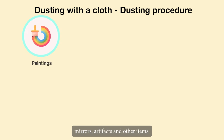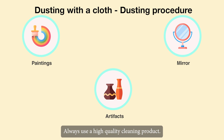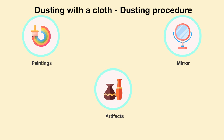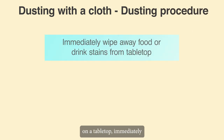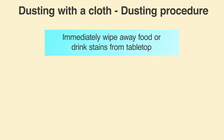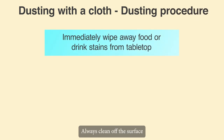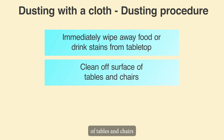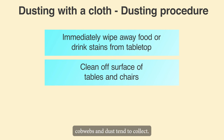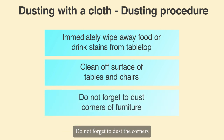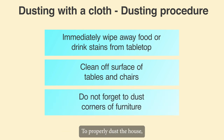Tips: When cleaning paintings, mirrors, artifacts and other items, always use a high quality cleaning product. Whenever you notice food or drink stains on a tabletop, immediately wipe them away. Always clean off the surface of tables and chairs that are hidden from view because this is where cobwebs and dust tend to collect. Do not forget to dust the corners of your furniture.